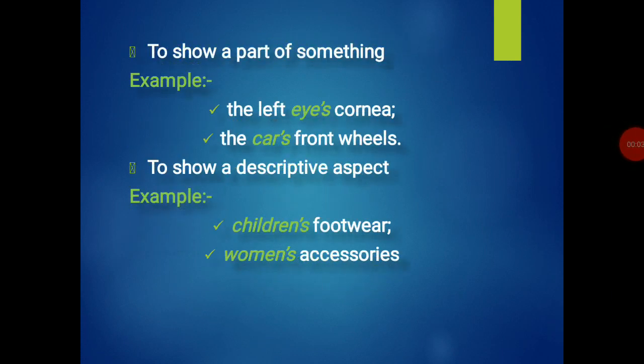Next, we use the possessive form of nouns to show a part of something. For example, the eye's cornea — we are talking about a part of the eye, which is the cornea. Another example is the car's front wheel — the front wheel is a part of the car. So we use the possessive form of a noun to show a part of something.